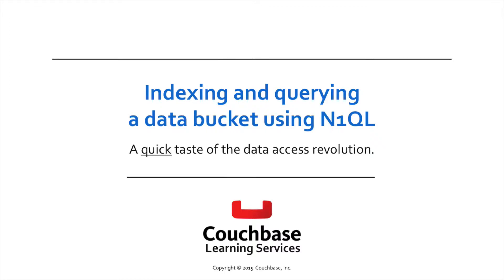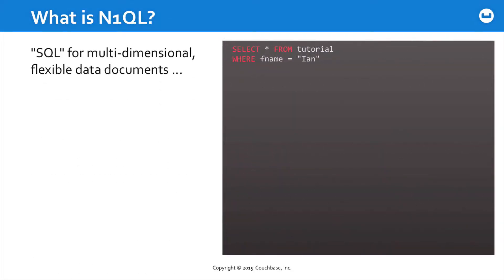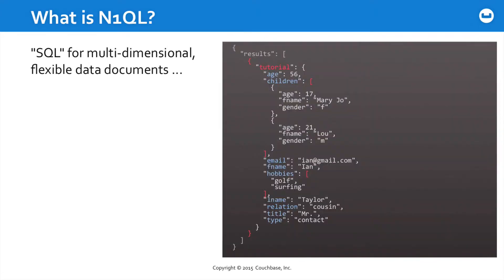N1QL is the powerful new query technology available in Couchbase 4. In this lesson, we're going to give you a quick taste of how you could implement N1QL through the Java SDK. So what is N1QL? You could think of it as structured query language for JSON — for your multidimensional flexible data documents. It allows you to execute queries as simple as SELECT * FROM tutorial WHERE first_name is Ian, and get back a response document or set of documents.